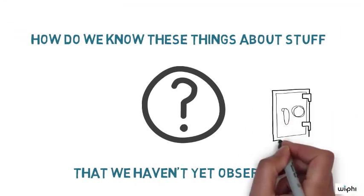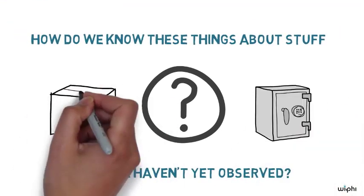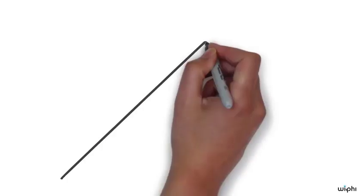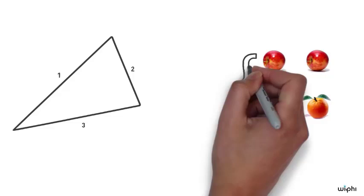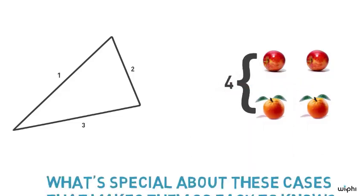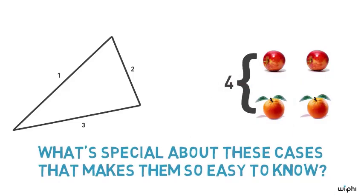So how do we know these things about stuff that we haven't yet observed? In some cases, it seems pretty easy. For instance, I know that all triangles, even triangles I haven't yet observed, have three sides. Or I know that next year, if I have two apples and two oranges, I'll have four pieces of fruit. What's special about these cases that makes them so easy to know?